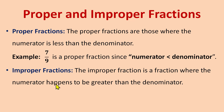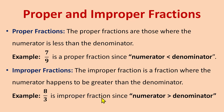An improper fraction is a fraction where the numerator is greater than the denominator. For example, 8/3 — here 8 is greater than 3, that is the numerator is greater than the denominator, so it's an improper fraction.